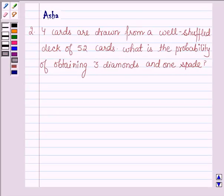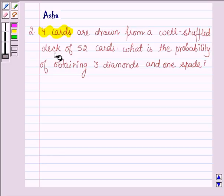Hello and welcome to the session. The question says, 4 cards are drawn from a well-shuffled deck of 52 cards. What is the probability of obtaining 3 diamonds and 1 spade?